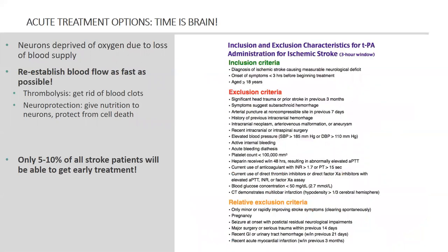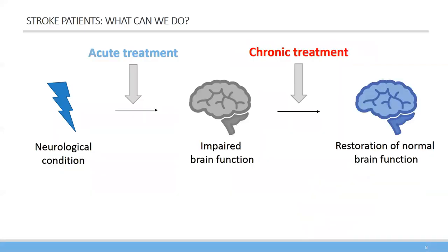This is easier said than done because many patients simply don't make it to the hospital in time — they don't realize they're having a stroke. There might be really small strokes that you don't immediately catch, or patients live far away and don't make it within the six-hour timeframe. And even if they do, there are very strict criteria for whether you receive TPA. Doctors have to be 100% sure that you have an ischemic stroke and not a hemorrhagic stroke, because for hemorrhagic strokes, thrombolytic treatment actually has negative consequences since it increases the bleeding. In the end, only 5 to 10% of all stroke patients are actually eligible for early treatment — a very low number.